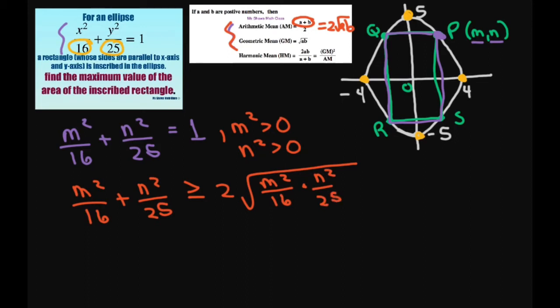Now this is when m squared divided by 16 equals n squared divided by 25. In other words, the left hand side equals the right hand side.